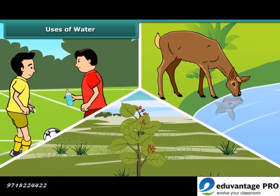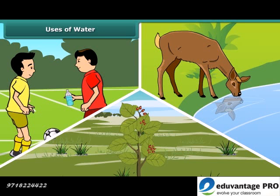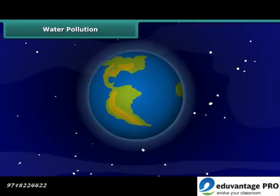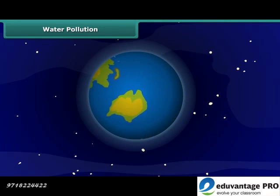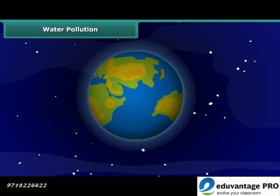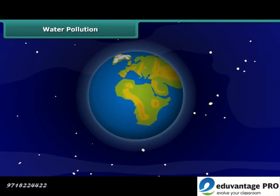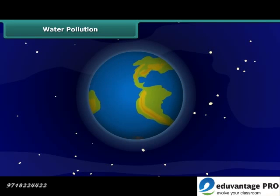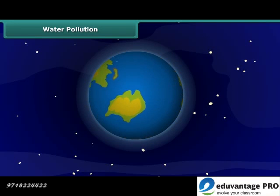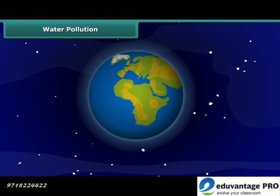Look at these activities. What is common in these activities? Yes, you are correct — all these activities highlight the uses of water. We know that 70% of the earth's surface is covered with water, and it is the most precious natural resource on our planet.